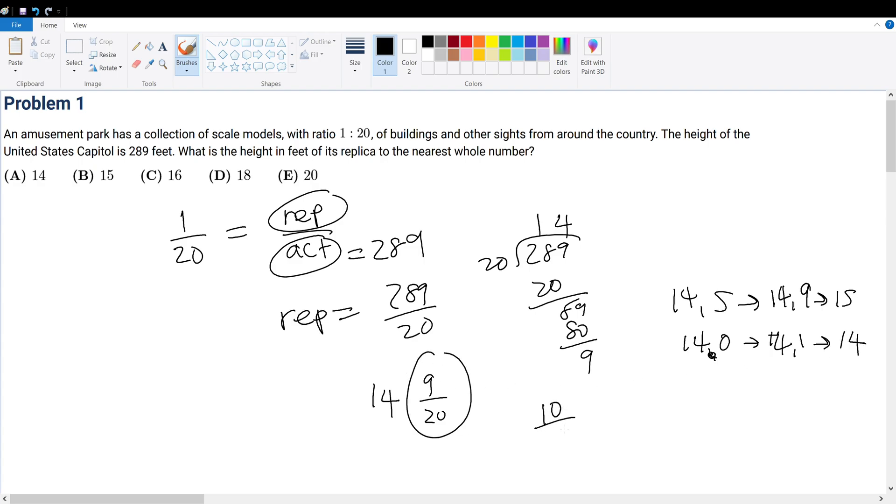9 over 20. 10 over 20 gives 0.5. So in other words, 14 and 10 over 20 would be the minimum for me to round up. Because this would give me 14.5 and that would round up. But 9 is less than 10. So that means 9 over 20 is less than 0.5. So this gets rounded down to a 14.